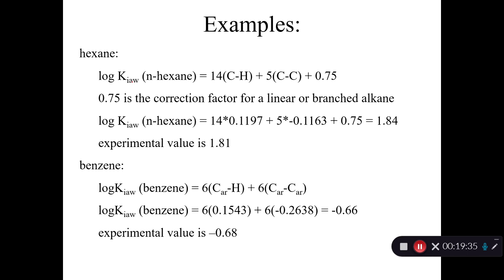There's also a chlorine bonded to a double-bonded carbon, such as in vinyl chloride, TCE, or PCE. We could predict the log Henry's Law constant for hexane: 14 carbon-hydrogen bonds and five carbon-to-carbon bonds (six carbons, five C–C bonds), plus a correction factor for a linear or branched alkane. Add that up and you get 1.84; the experimental value is 1.81 — good agreement. For benzene: six aromatic carbon-to-hydrogen bonds and six aromatic carbon-to-aromatic carbon bonds. Add those up, you get minus 0.66; the experimental value is minus 0.68. Life is good.